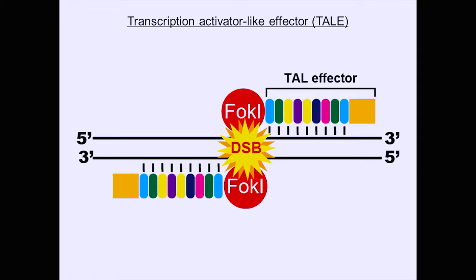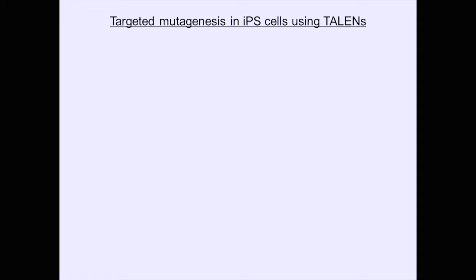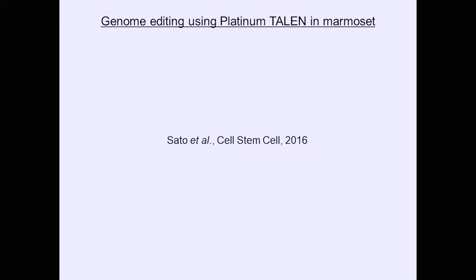Unlike radiation-based methods, gene editing can target only the specific area needed. When it is no longer needed, it can be removed. It is very easy to use. We developed TALENs that originated from plant proteins, which make very precise cleavages. We named them 'platinum TALENs' — and we can produce them in three days. They can be provided to various research including iPS cell research, and they work very well.